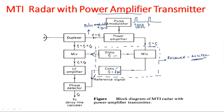The pulse-modulated signal with frequency fl plus fc is passed through a duplexer. Since we are using a single antenna, a duplexer is necessary. The duplexer is a device used to separate the transmitting and receiving signals — during transmission the signal travels only toward the antenna, and during reception the signal travels only toward the receiver.